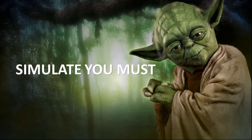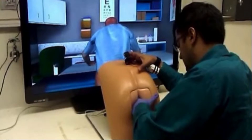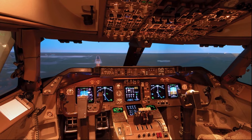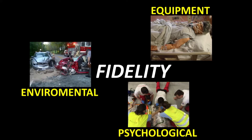Simulate we must, it was no question. The question was, does the simulation have to be this detailed? And the other question was, does it have to be this expensive? The answers were found in the literature. We looked up simulation fidelity and found that it basically comprises three major elements: equipment fidelity, environmental fidelity, and psychological fidelity.